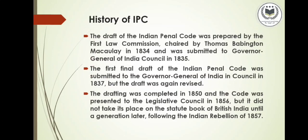The history of the Indian Penal Code: the draft was prepared by the First Law Commission, chaired by Sir Thomas Babington Macaulay in 1834, and was submitted to the Governor General of India in 1835. The first final draft was submitted to the Governor General in Council in 1837, but was again revised. The drafting was completed in 1850, and the code was presented to the Legislative Council in 1856, but did not take its place on the Statute Book of British India until after the Indian Rebellion of 1857.